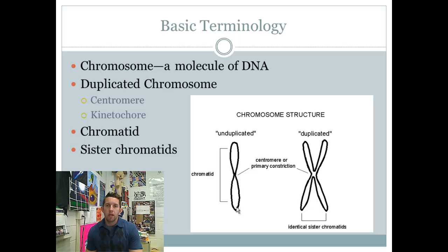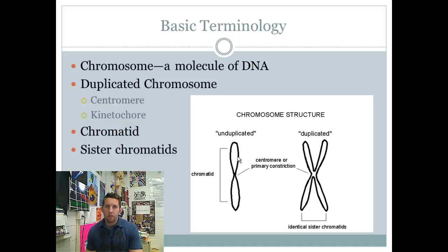An unduplicated chromosome can also be called a chromatid. Now we have a duplicated chromosome, or a pair of chromatids — one chromatid here, one chromatid here. Since they are identical to one another, they're like Siamese twins held together at the centromere — we call them sister chromatids. The word kinetochore refers to a protein within the centromere. There would be a kinetochore on each side. Breaking down the word, 'kinetics' has something to do with movement — and you'll see later on that indeed it does.